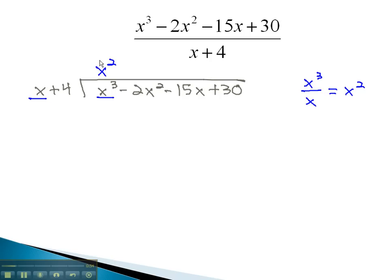We will then multiply the x squared by the entire binomial. x squared times x is x cubed plus 4x squared. As we combine, we must change the sign, making both positives into negatives.